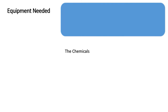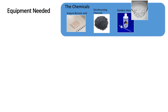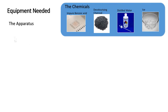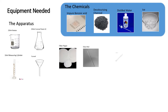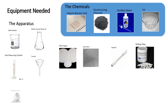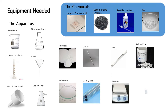The chemicals required are impure benzoic acid, decolorising charcoal, distilled water, and ice. The apparatus needed are a 250ml beaker, 250ml conical flasks, 10ml measuring cylinder, a funnel, filter paper, glass rod, spatula, boiling chips, Hirsch funnel, sidearm filter and accessories for vacuum filtration, watch glass, capillary tube, hot plate, and a melting point apparatus.